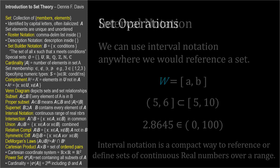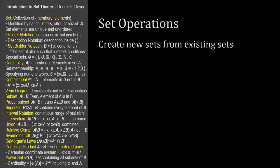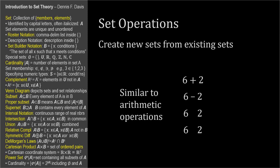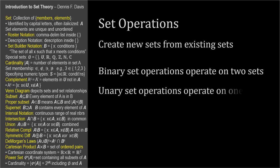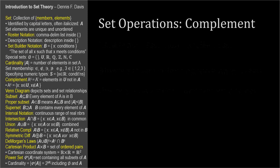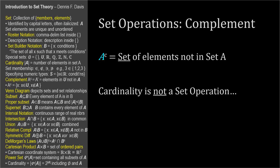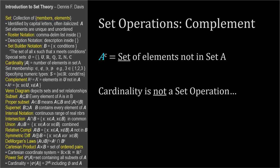Now we'll move on to a new topic: set operations. Set operations are ways to create new sets from existing sets. It's a familiar concept — we can perform arithmetic operations on two numbers to get different numbers, and we can perform set operations on sets to get different sets. Set operators that deal with two sets are called binary set operations. Set operations that deal with only one set are called unary set operations. We've already covered one unary set operator — the complement. We've also covered cardinality, but cardinality is not a set operation because it doesn't result in another set; rather, it's just the number of elements in a set.